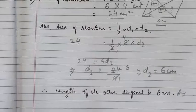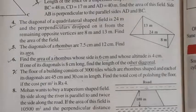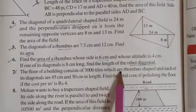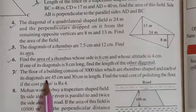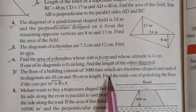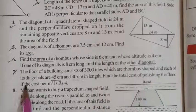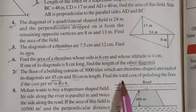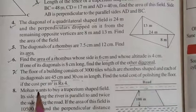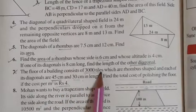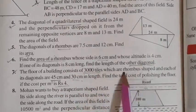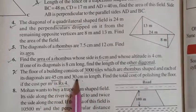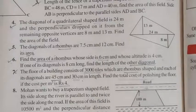Now let us see question number 7. It says: the floor of a building consists of 3000 tiles which are rhombus shaped, and each of its diagonals are 45 cm and 30 cm in length. Find the total cost of polishing the floor if the cost per meter square is ₹4. So we have to find the total cost of polishing. First of all we will find the area of one tile.